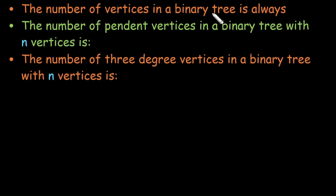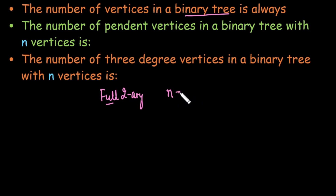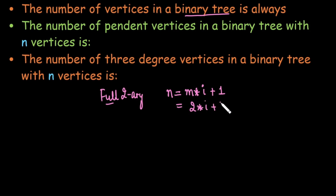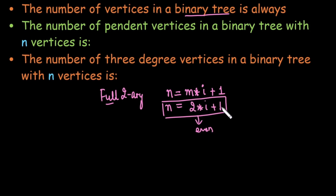Now let's answer three application questions. First: the number of vertices in a binary tree is always what? A binary tree is a full 2-ary tree. The number of vertices equals 2 × i + 1. Since 2 times any number is always even, and even plus 1 is always odd, the total number of vertices in a binary tree is always odd.